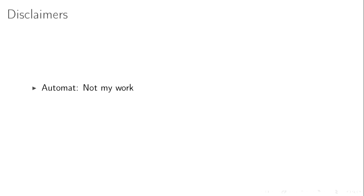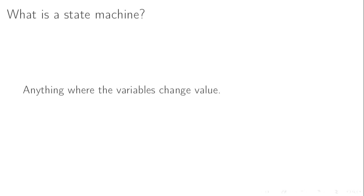I need to be really clear upfront that the library I'll be talking about, Automat, is not my library. These slides and examples are definitely my fault. So what is a state machine? At a very abstract level, a state machine is any thing — we'll deal with programs — that has a variable that changes values. So you've got a program with foo, and it starts off being bar and changes to baz. That is a state machine.